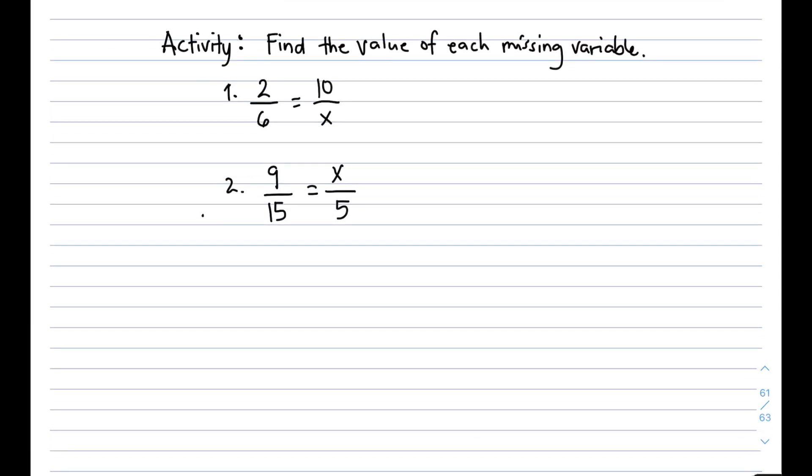Given this activity, find the value of each missing variable. We have here in number 1, 2 over 6 is equal to 10 over x. Number 2, we have 9 over 15 is equal to x over 5. So we are asked here to find the value of the variable x for us to complete the given proportions.